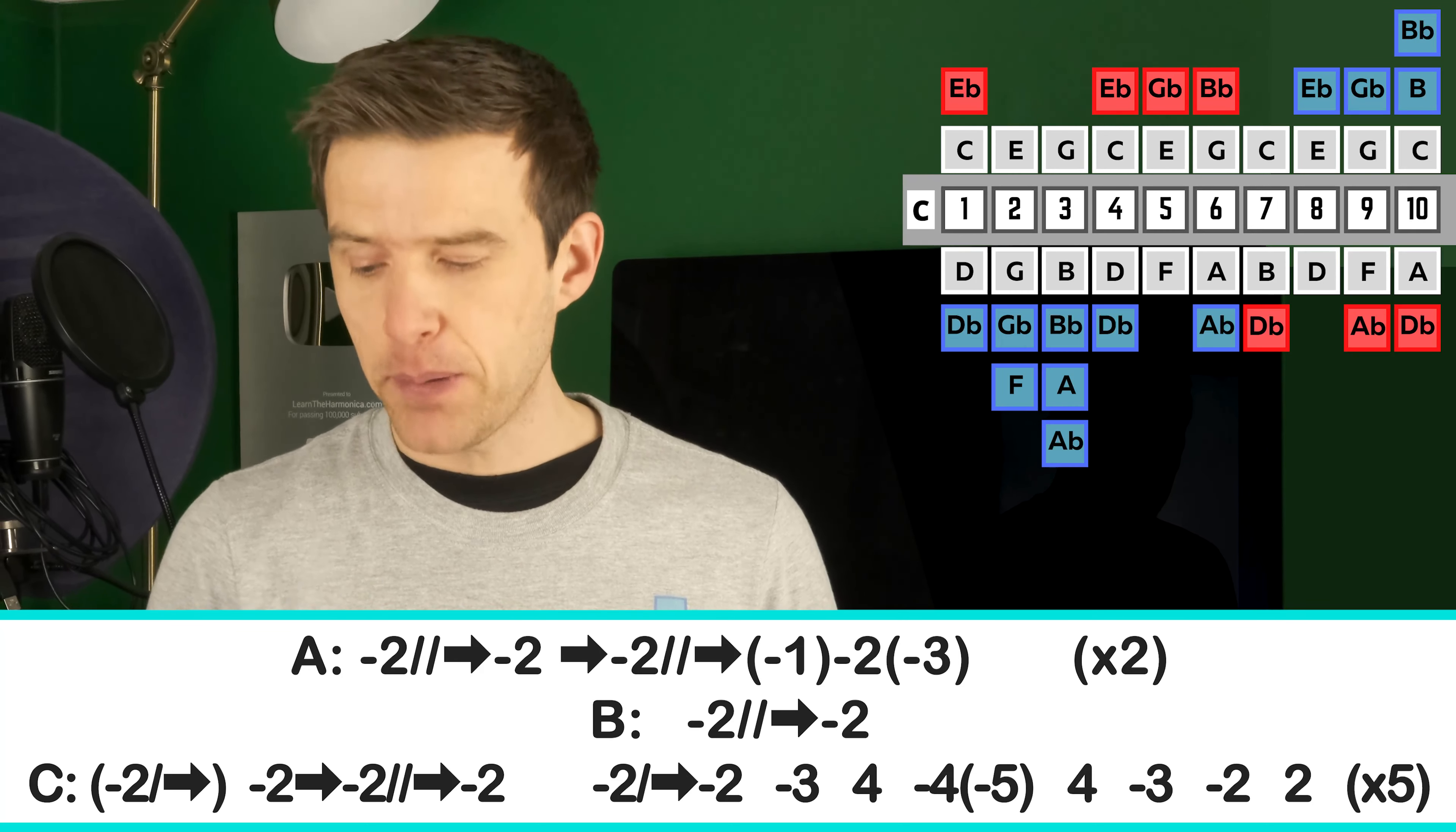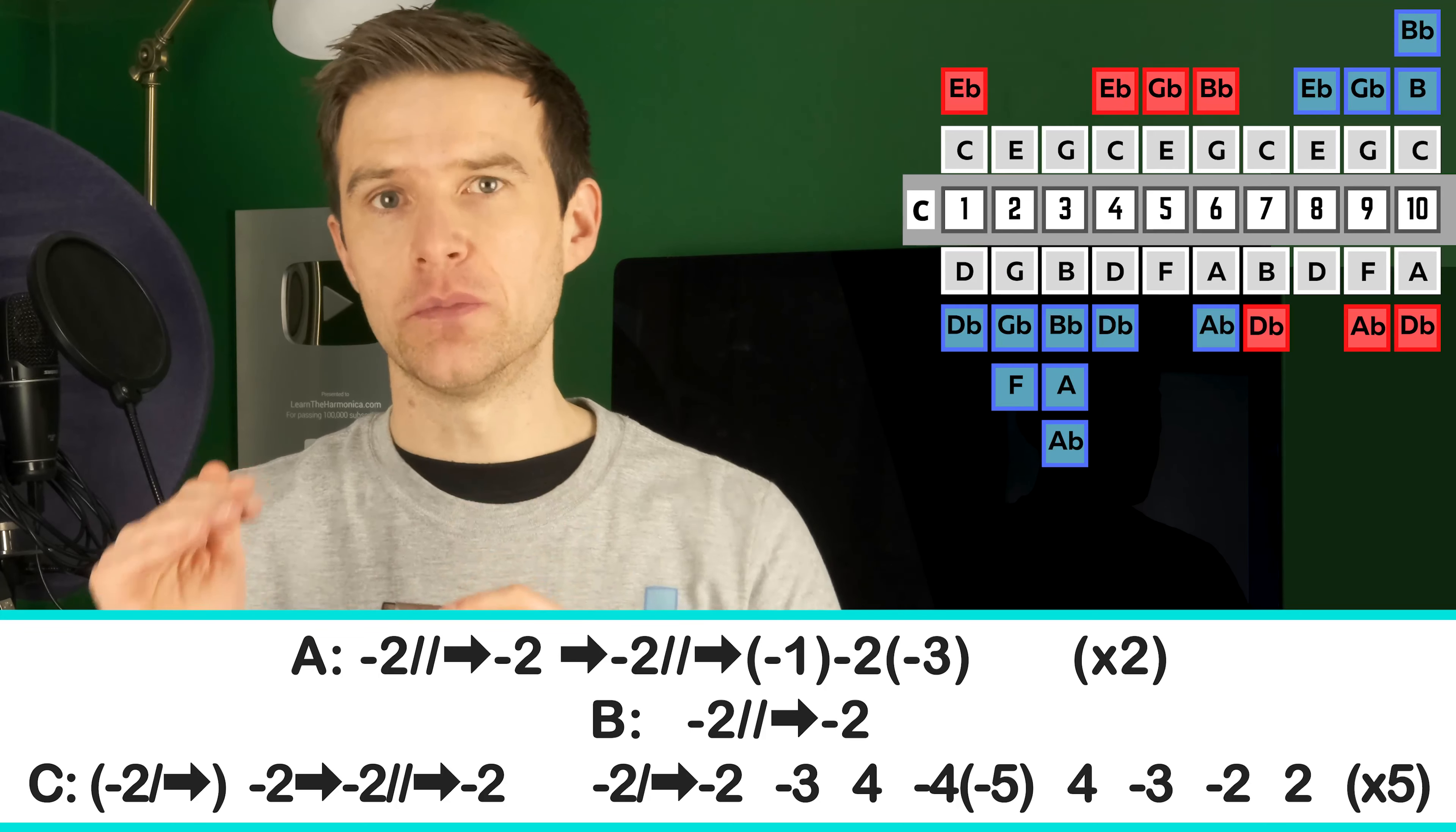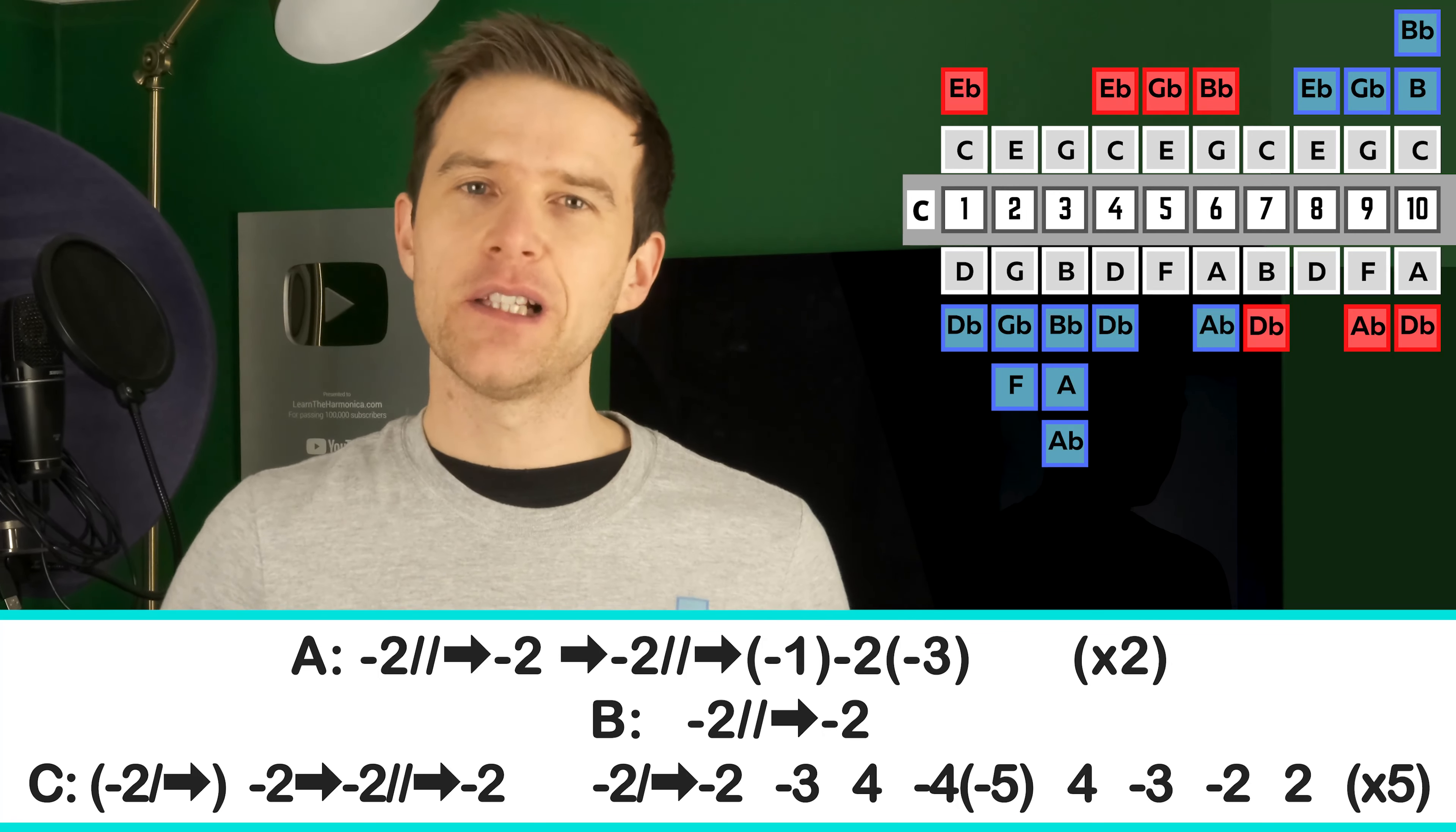And then line B is just kind of from the two-draw bend upward. From the bend up to the two-draw natural note. I put some vibrato on there. I'm not sure there actually is any vibrato.